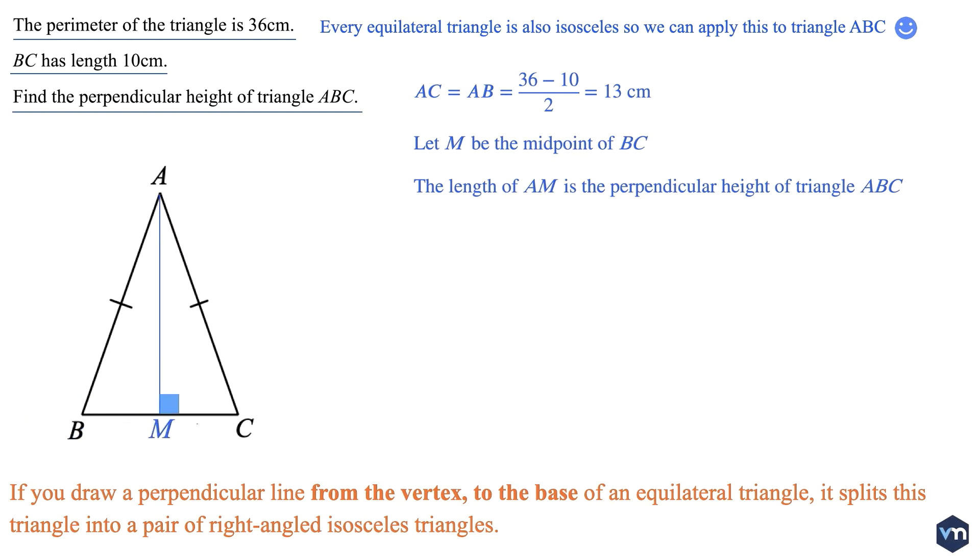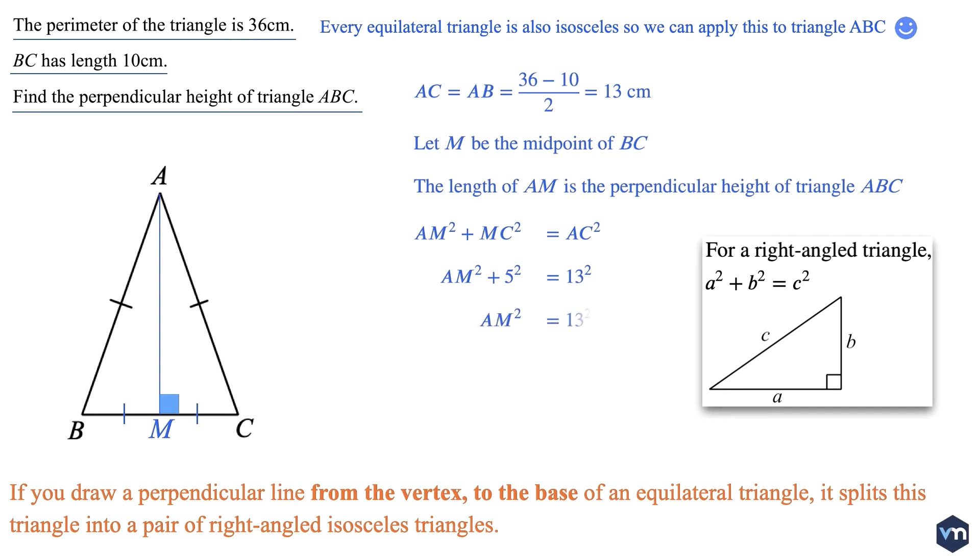So AM squared plus MC squared equals AC squared. Therefore AM squared plus 5 squared equals 13 squared. And after rearranging, AM squared equals 144.